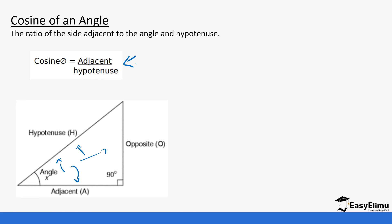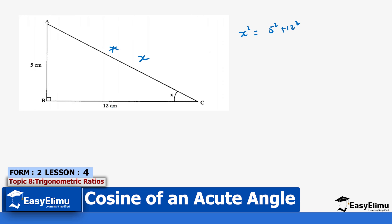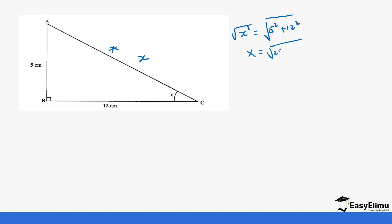Using the same example we had before, to calculate the hypotenuse we give it the value x. It's going to be x squared equals 5 squared plus 12 squared. Taking the square root of both sides gives us x equals the square root of 25 plus 144, which is the square root of 169, which equals 13 centimeters.